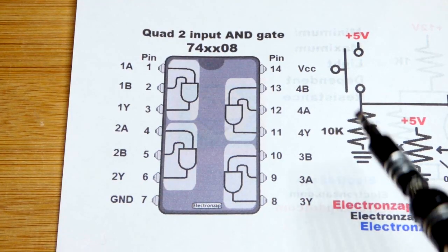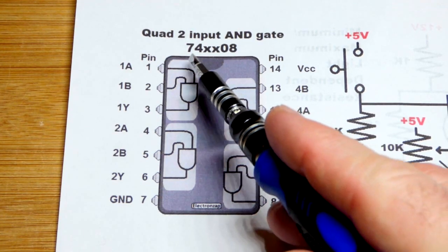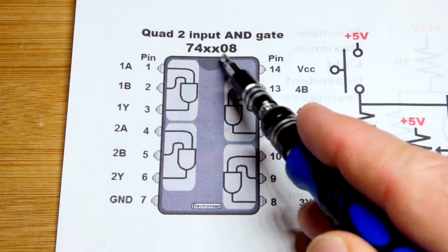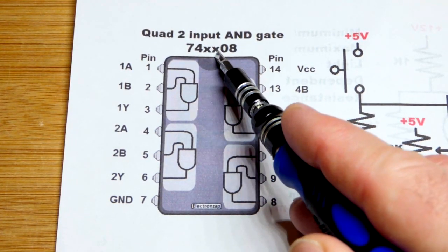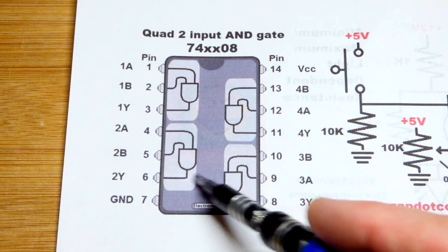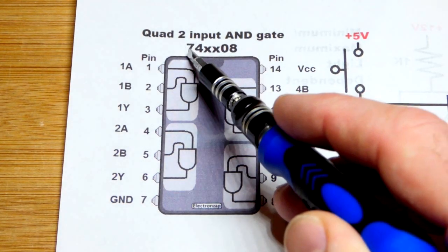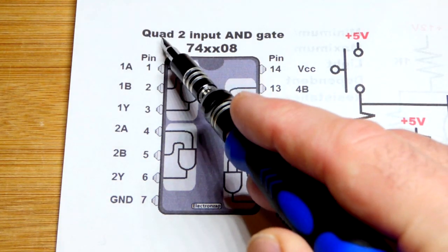Now in an older diagram that I used before, we can see the pin layout for the 7408. So again, we're using the HC version, the high-speed CMOS version, but the pin layouts are the same, no matter the version, if it's a 7400 series integrated circuit.